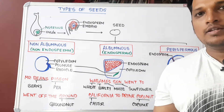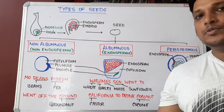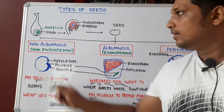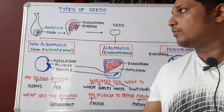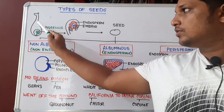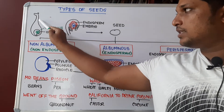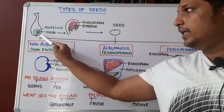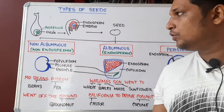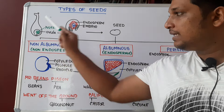Hello, good morning everyone. Now we are going to understand what are the types of seeds found in plants, and how a seed is formed. A flower contains a pistil having stigma, style, and ovary. Within the ovary there is an ovule.